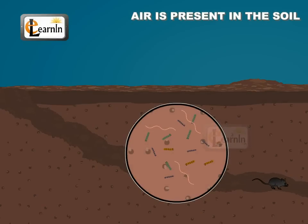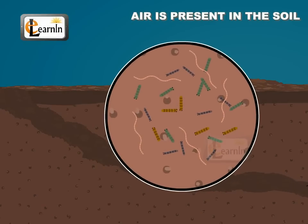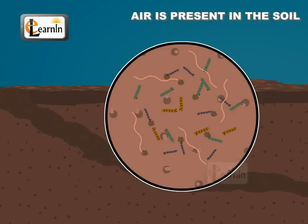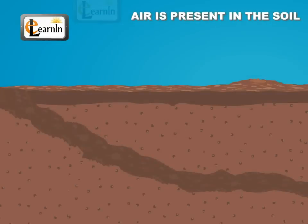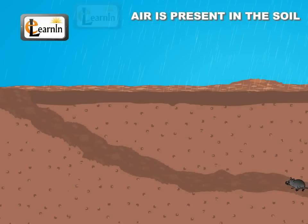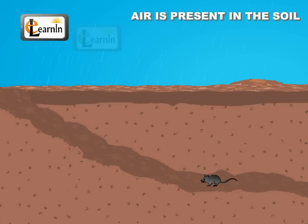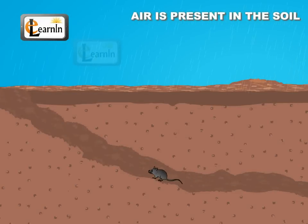Earthworms are especially popular in this aspect and are known as farmer's friends, since they keep the different layers of soil under continuous rotation, thereby keeping the soil fertile. It has been observed that a lot of worms and animals that live inside the soil come out during the rainy season.